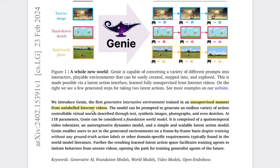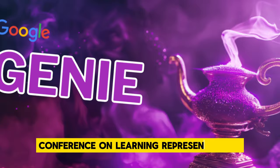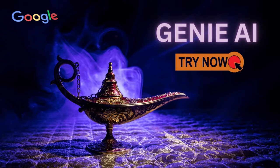the AI that solved a 50-year-old challenge in biology. GENI is the result of a collaboration between Google DeepMind and the University of British Columbia, and it was recently presented at the International Conference on Learning Representations, one of the most prestigious AI conferences in the world.